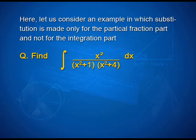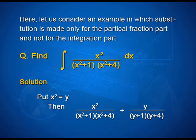Let us consider an example in which substitution is made only for the partial fraction part and not for the integral part. Find integral x²/((x²+1)(x²+4)) dx. For the solution, put x² = y, then x²/((x²+1)(x²+4)) can be written as y/((y+1)(y+4)).